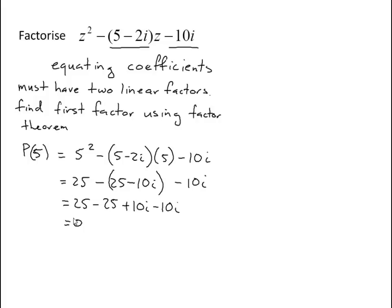So what's that telling me? z minus 5 is a factor.